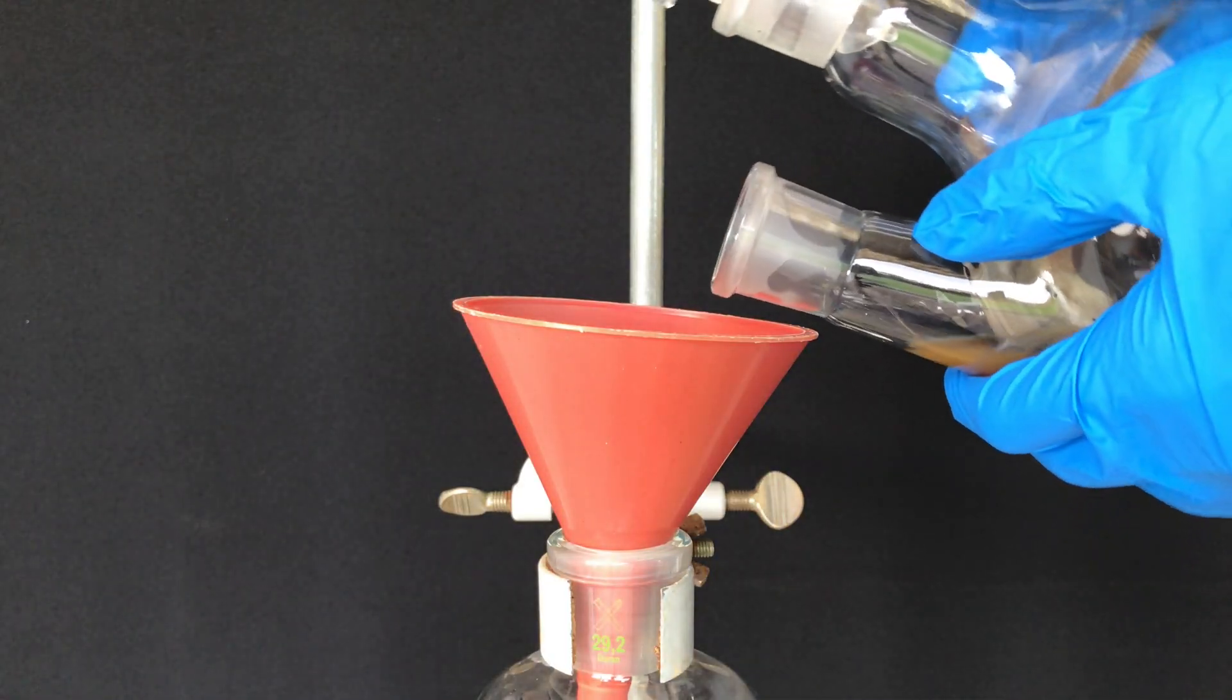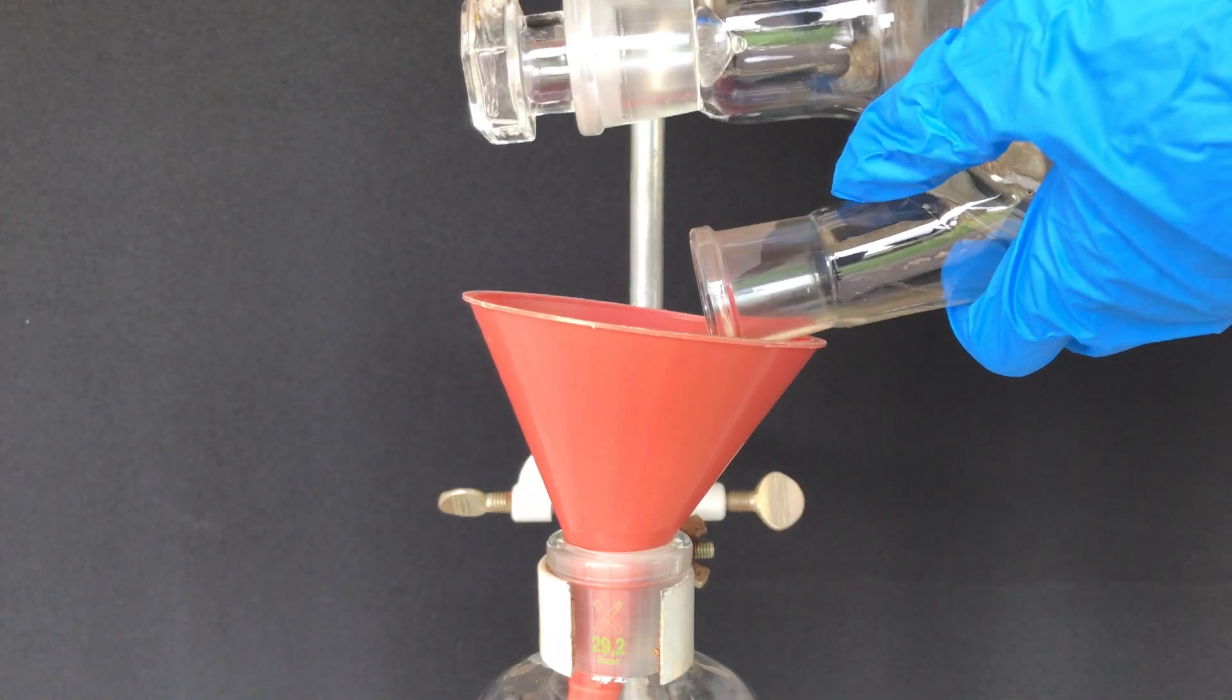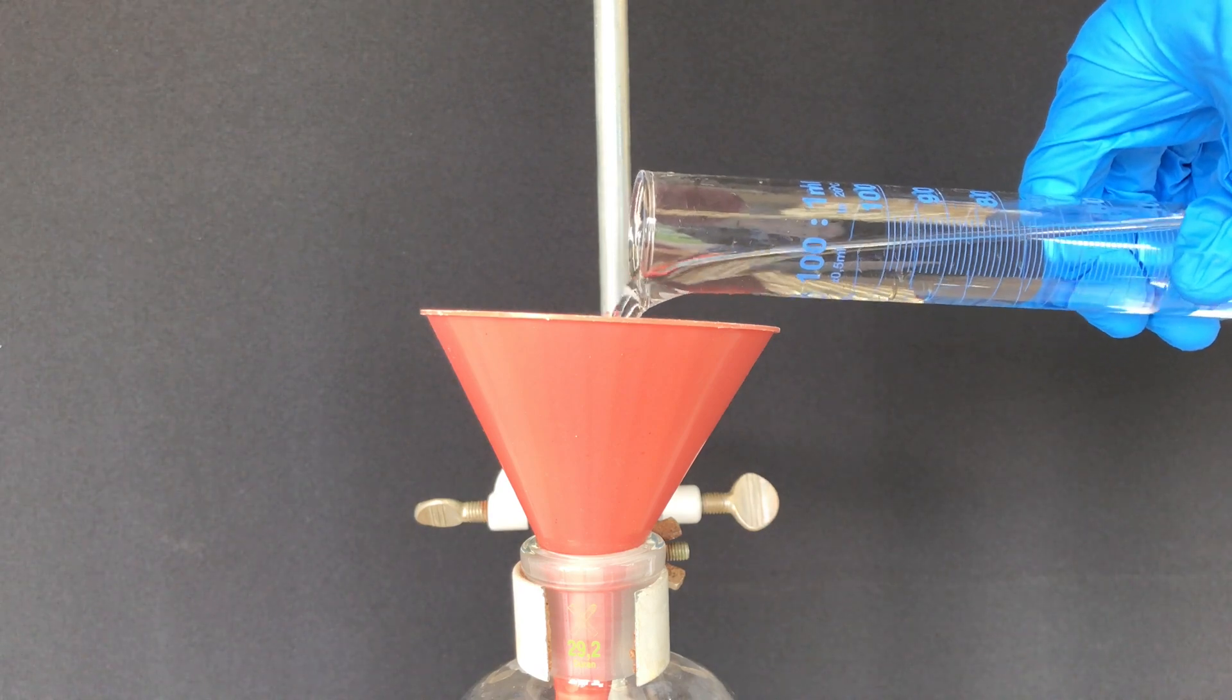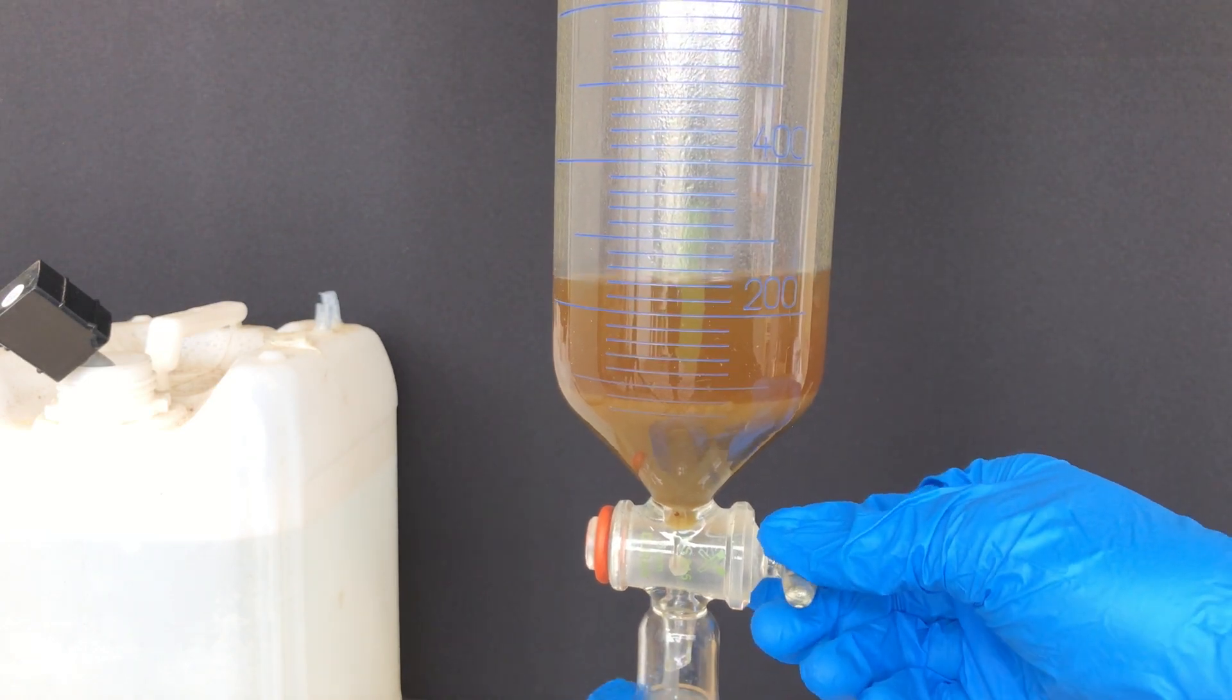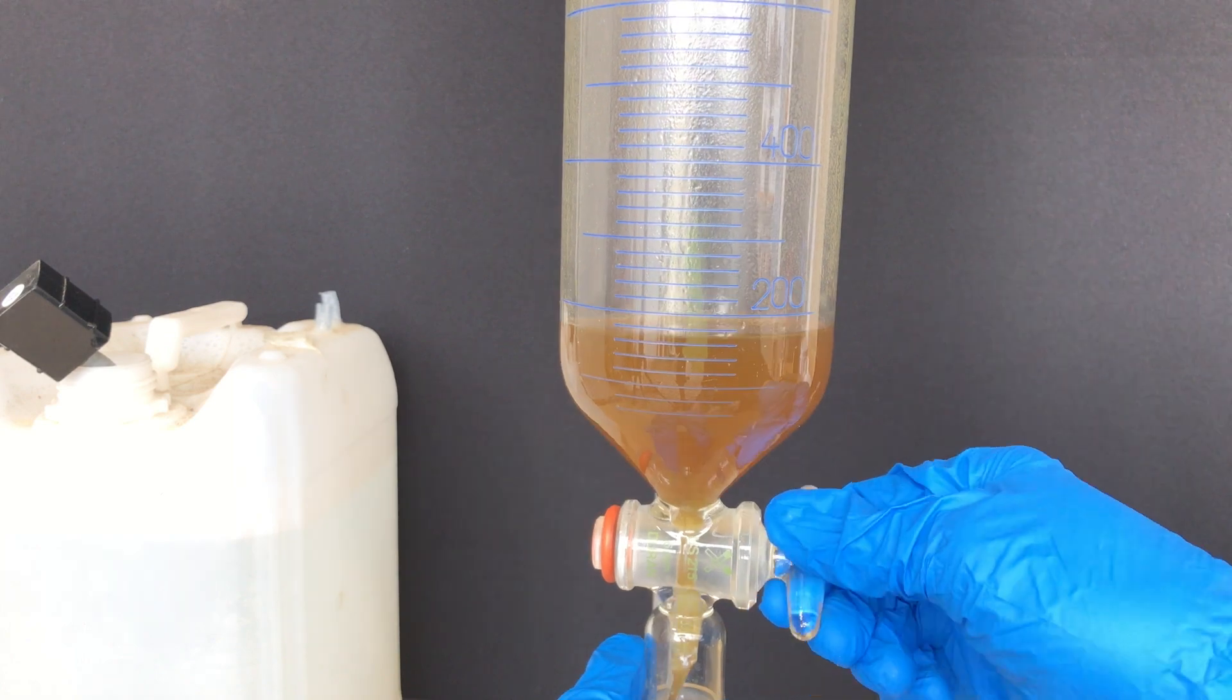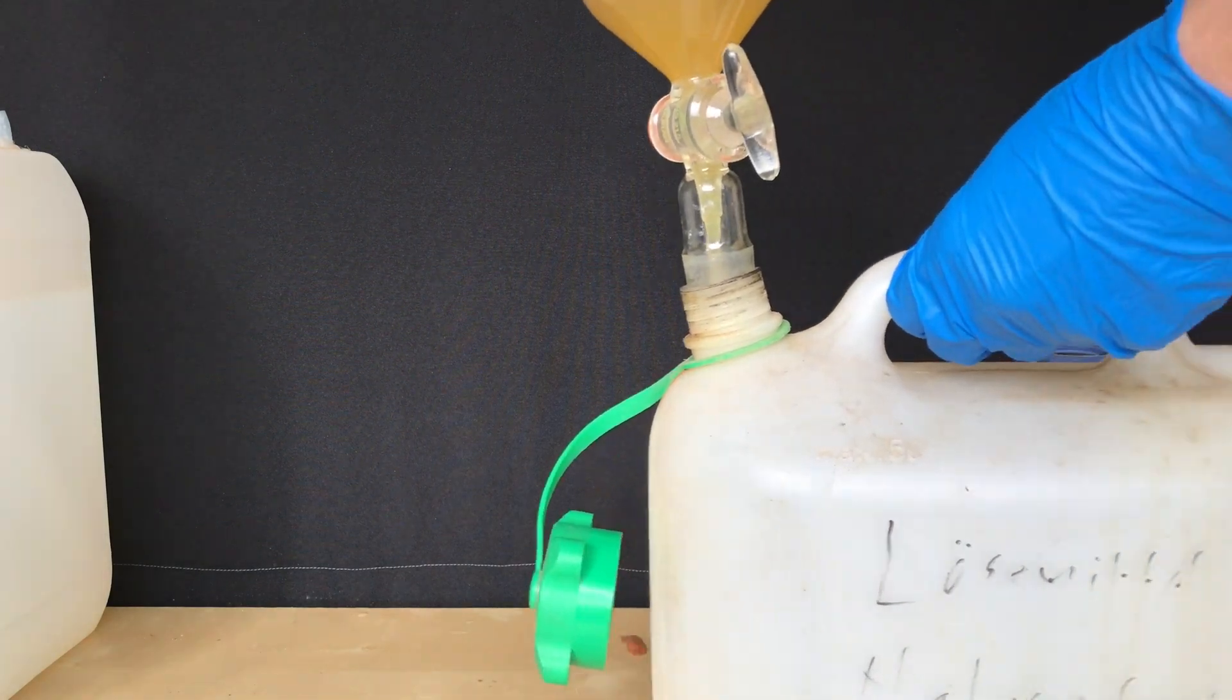For the next step the dirty looking solution was transferred to a separatory funnel. The flask was rinsed with about 30ml of the solvent which was previously distilled off. To get alkaloids out of the organic layer for further purification, about 150ml of 14% sulfuric acid were added. The alkaloids form water-soluble sulfuric acid salts which do not dissolve in the hexane-heptane mix. The funnel was shaken for about a minute and the bottom layer containing the product was drained into a flask. The top layer was discarded.